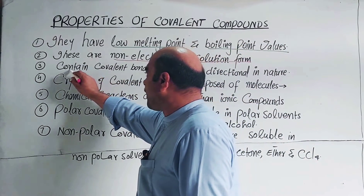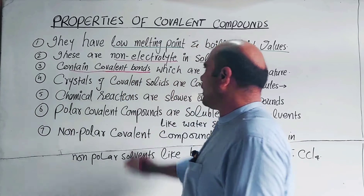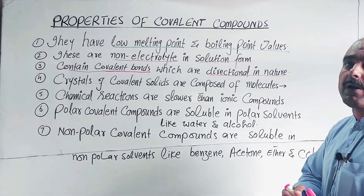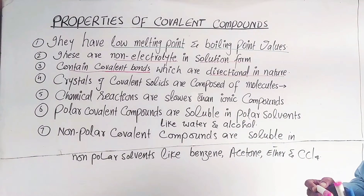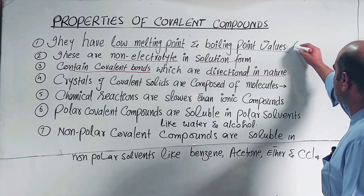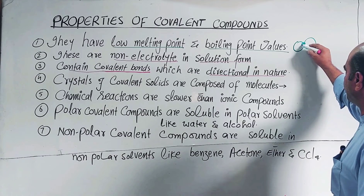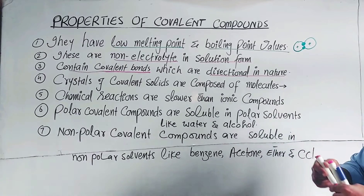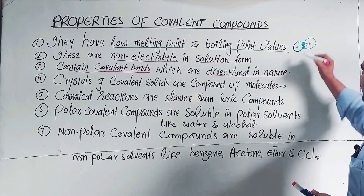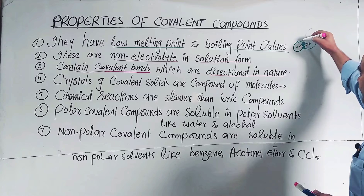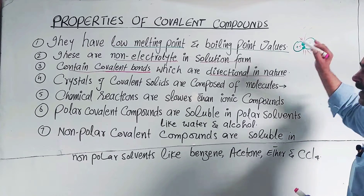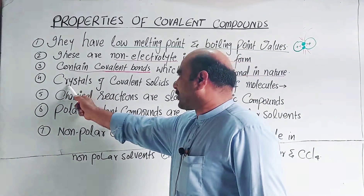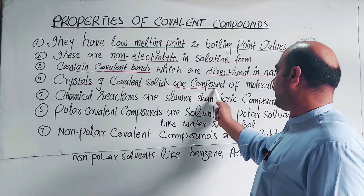Property number three: covalent compounds contain covalent bonds, and these covalent bonds are directional in nature. The force of attraction acts in a proper direction. For example, when two hydrogen atoms share electrons, that force of attraction lies along a specific direction — it is not spread to other sides. So covalent bonds are directional in nature.